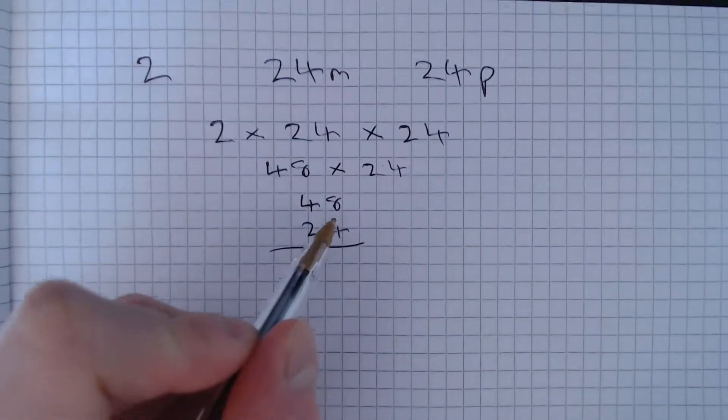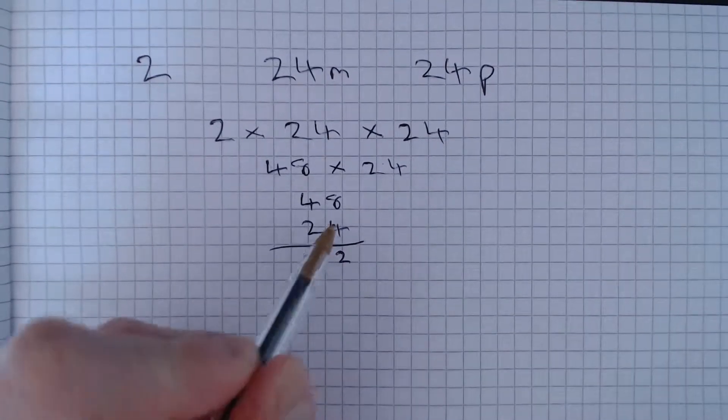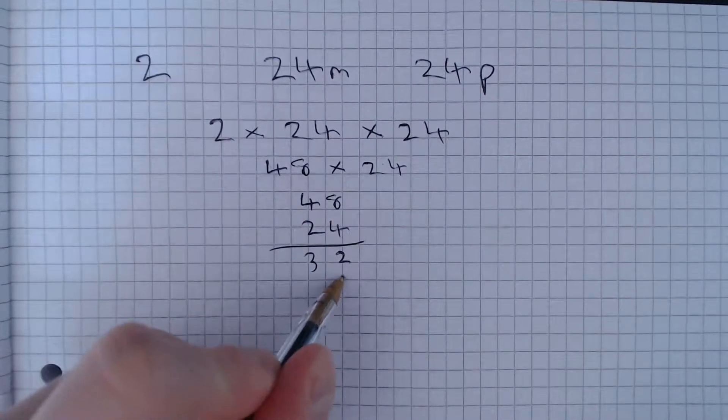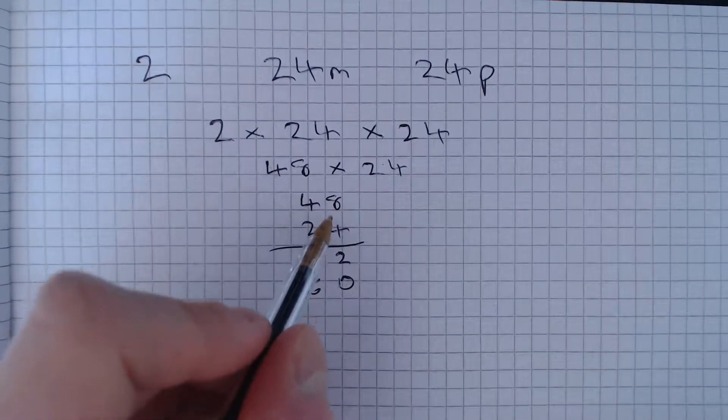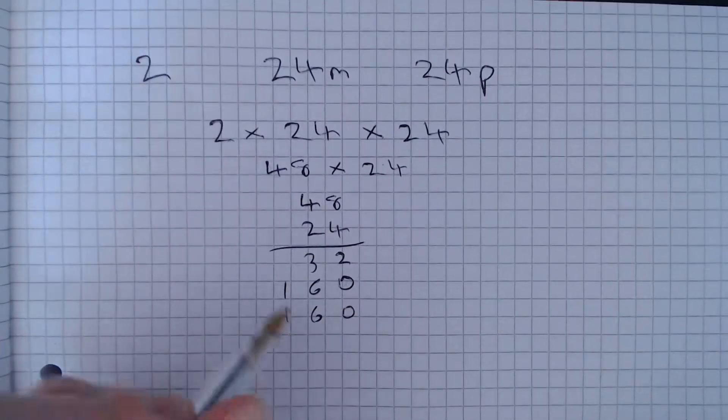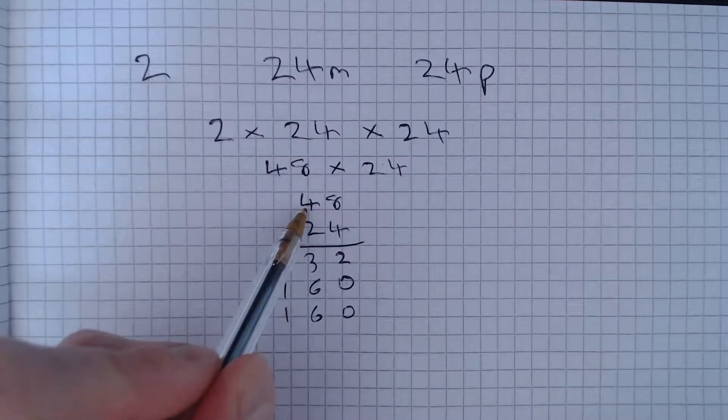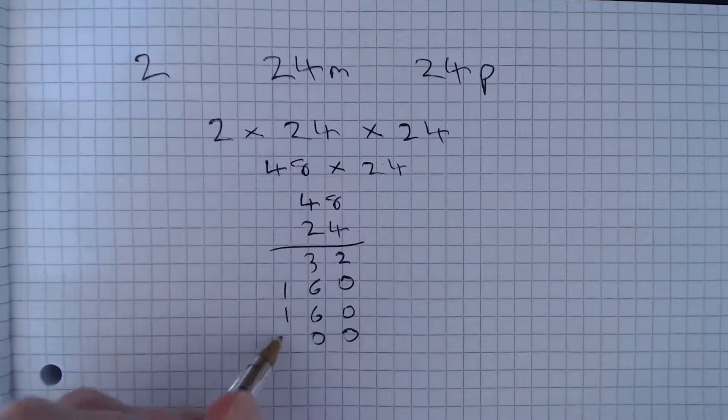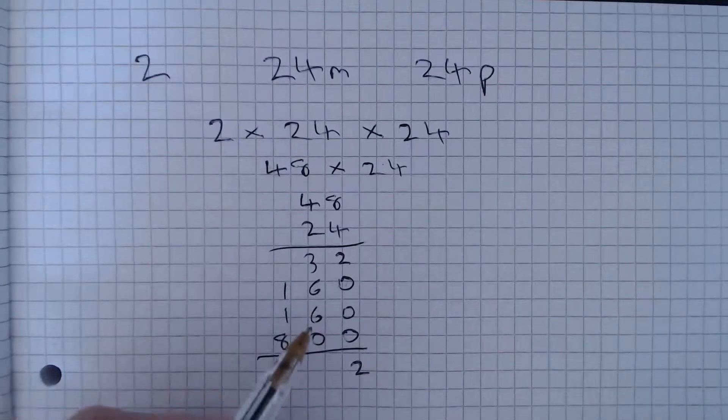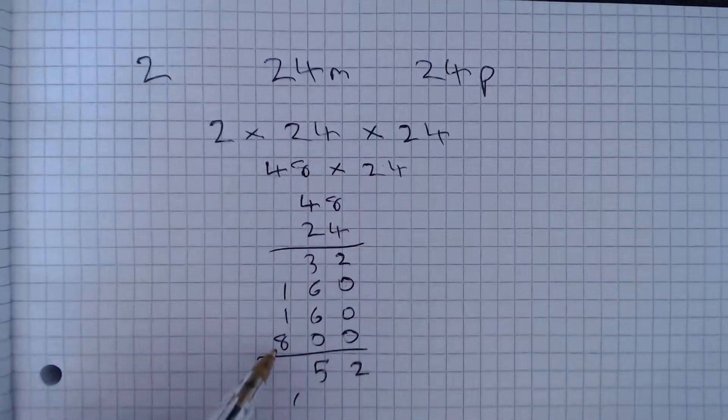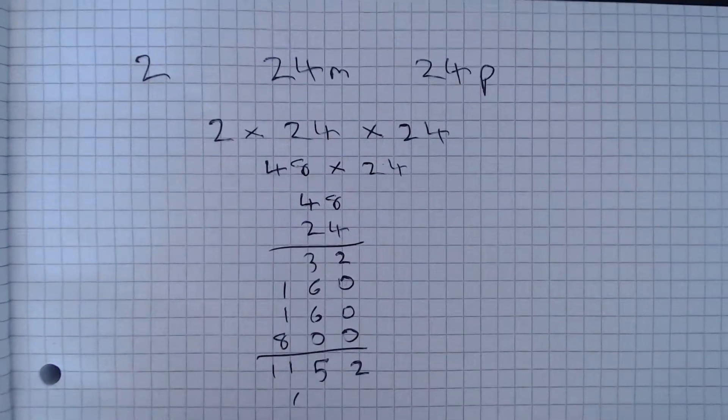So 8 4's are 32, 4 4's are 16 with a 0, 2 8's are 16 with a 0 and 2 4's are 8 with 2 0's. So we're going to add all this up and we're going to get 1152.